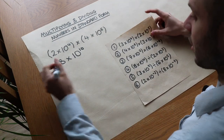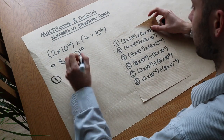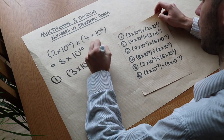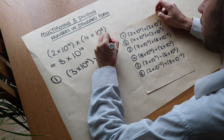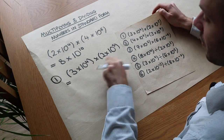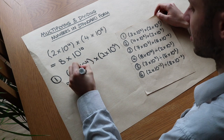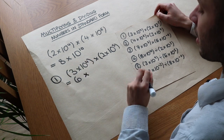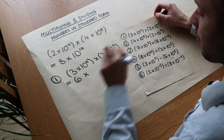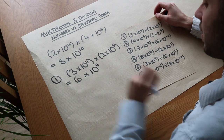Let's do these examples here — it does get a bit harder. We've got 3 times 10 to the 4 times 2 times 10 to the 5. We do the same thing as before: 3 times 2 is 6, which is a number between 1 and 10, and then 10 to the 4 times 10 to the 5 — you add the powers — 4 plus 5 is 9, so that's a relatively simple one.